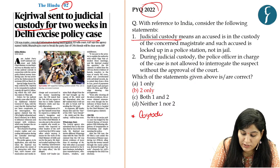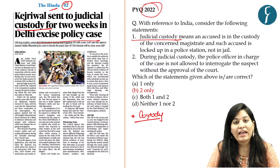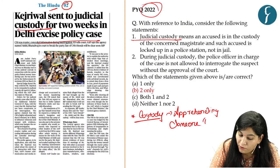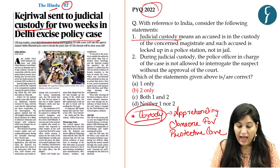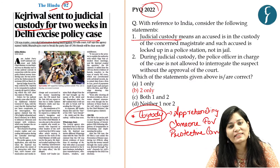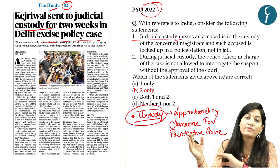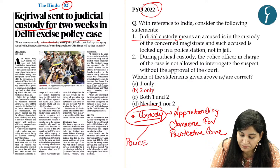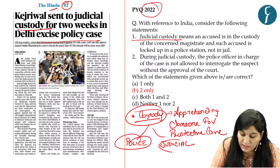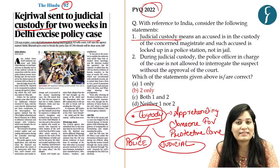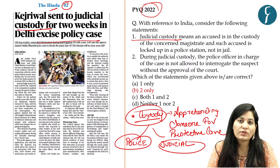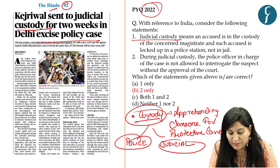The word custody means apprehending someone for protective care. The basic principle behind this is arresting the suspect of a crime to save others in society from that accused. We have two terms: police custody and judicial custody. Police custody is the situation when police arrest and hold a suspect at a police station based on an FIR or complaint, done so that the accused can be stopped from committing further illegal activities. Judicial custody is when the accused is in the custody of the concerned magistrate.